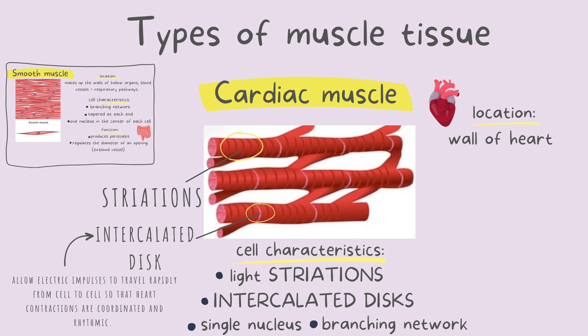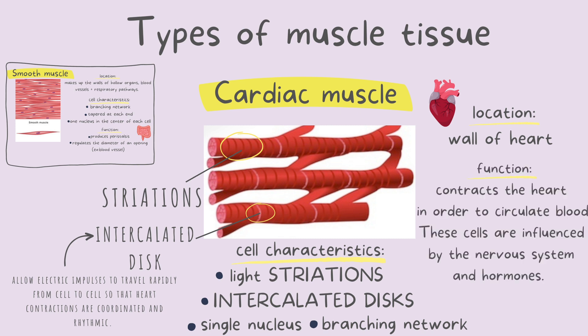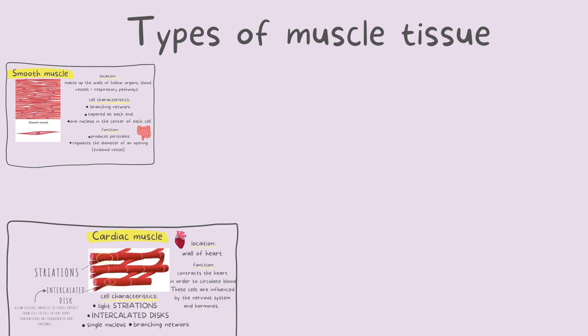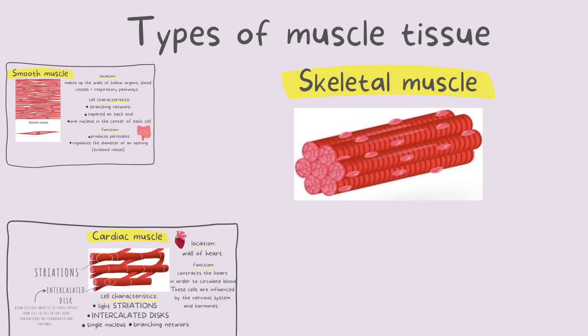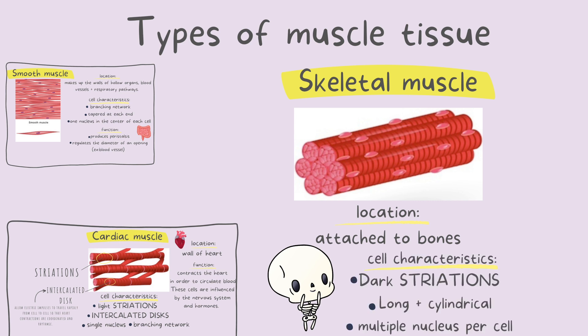The cardiac cells contract the heart in order to circulate the blood. It's also important to note that these cells are influenced by the nervous system and hormonal fluctuations. Lastly, we have our skeletal muscle. These are attached to bones. These cells have dark striations, are long and cylindrical, and have multiple nuclei per cell.